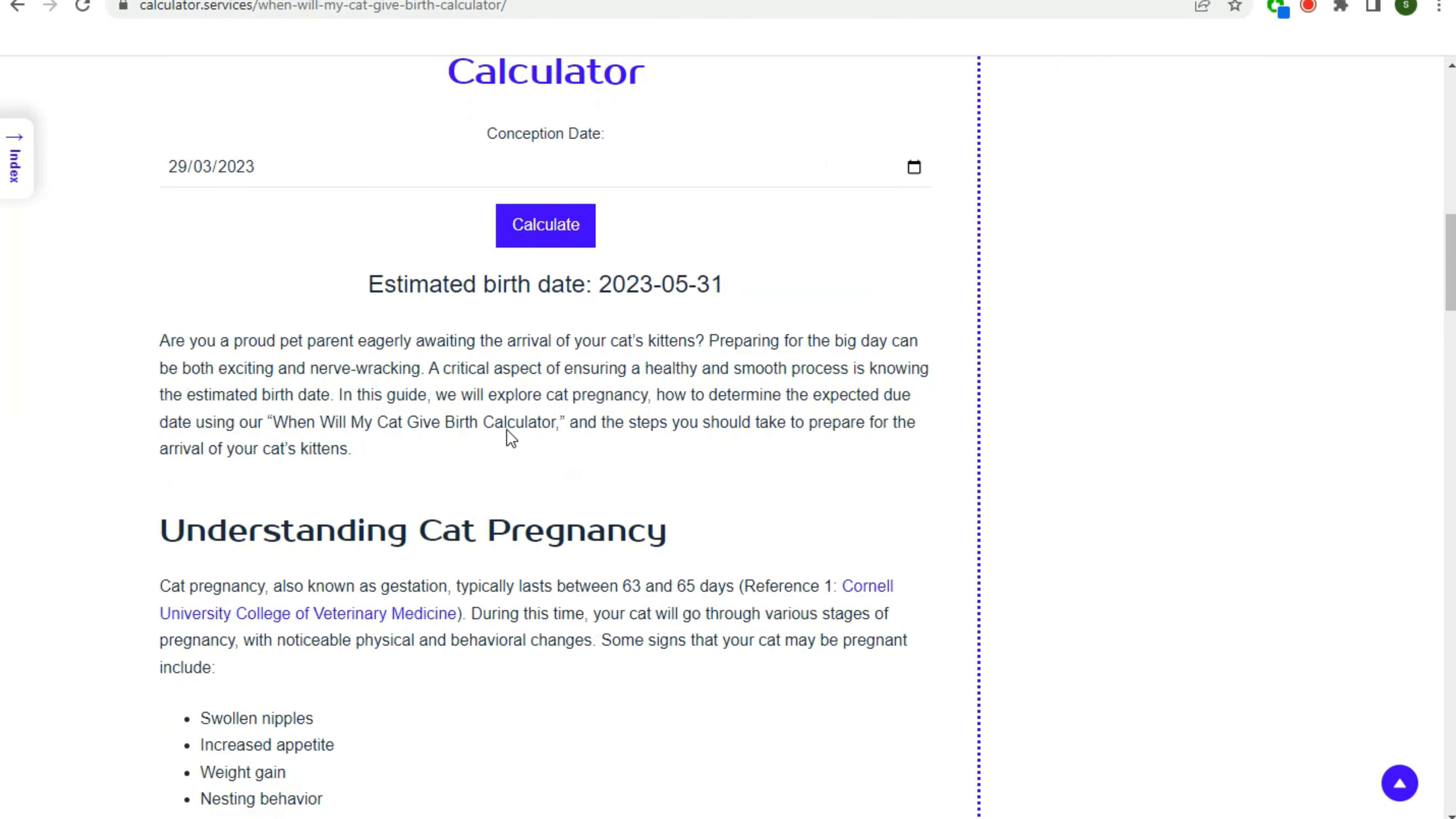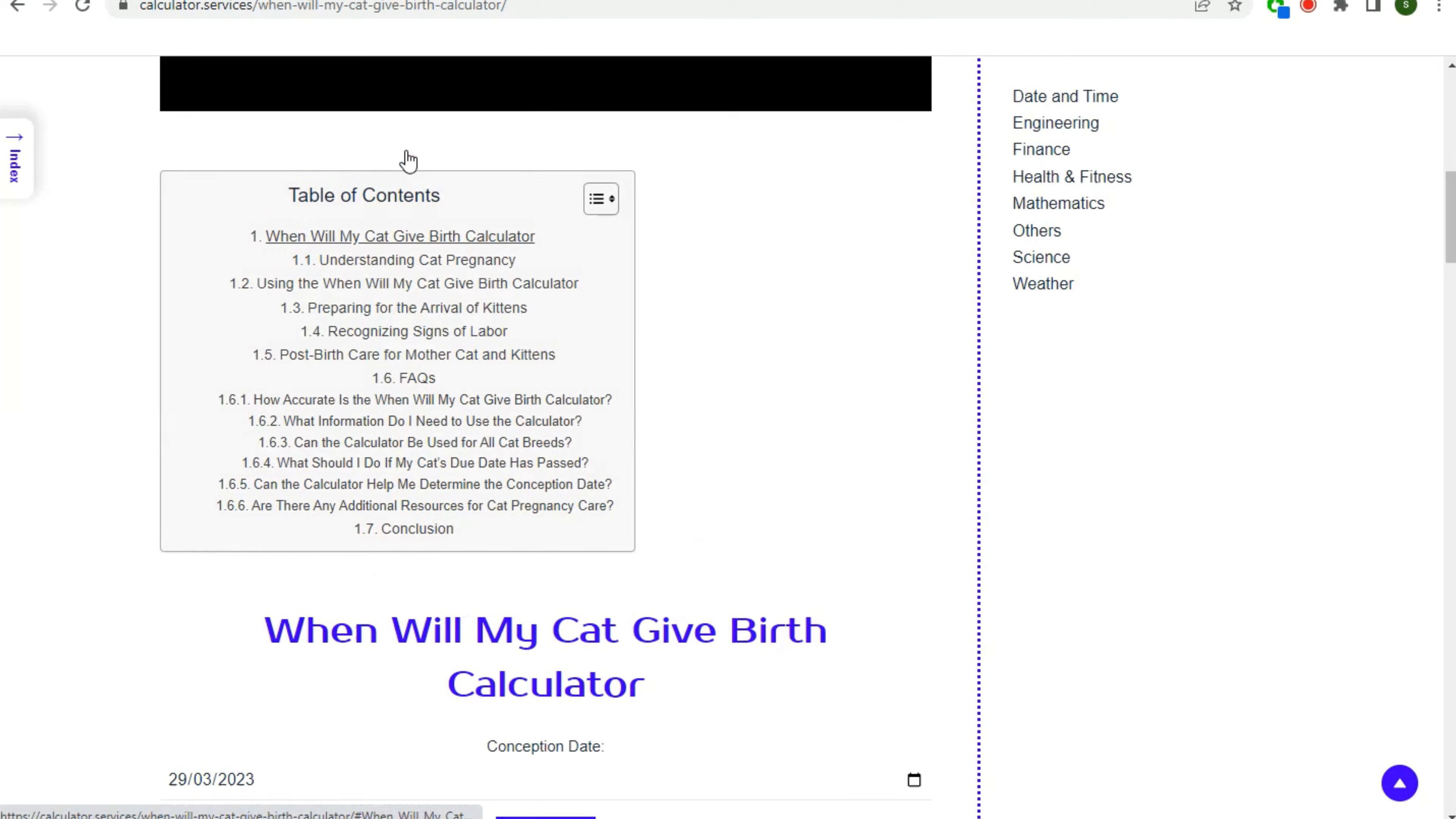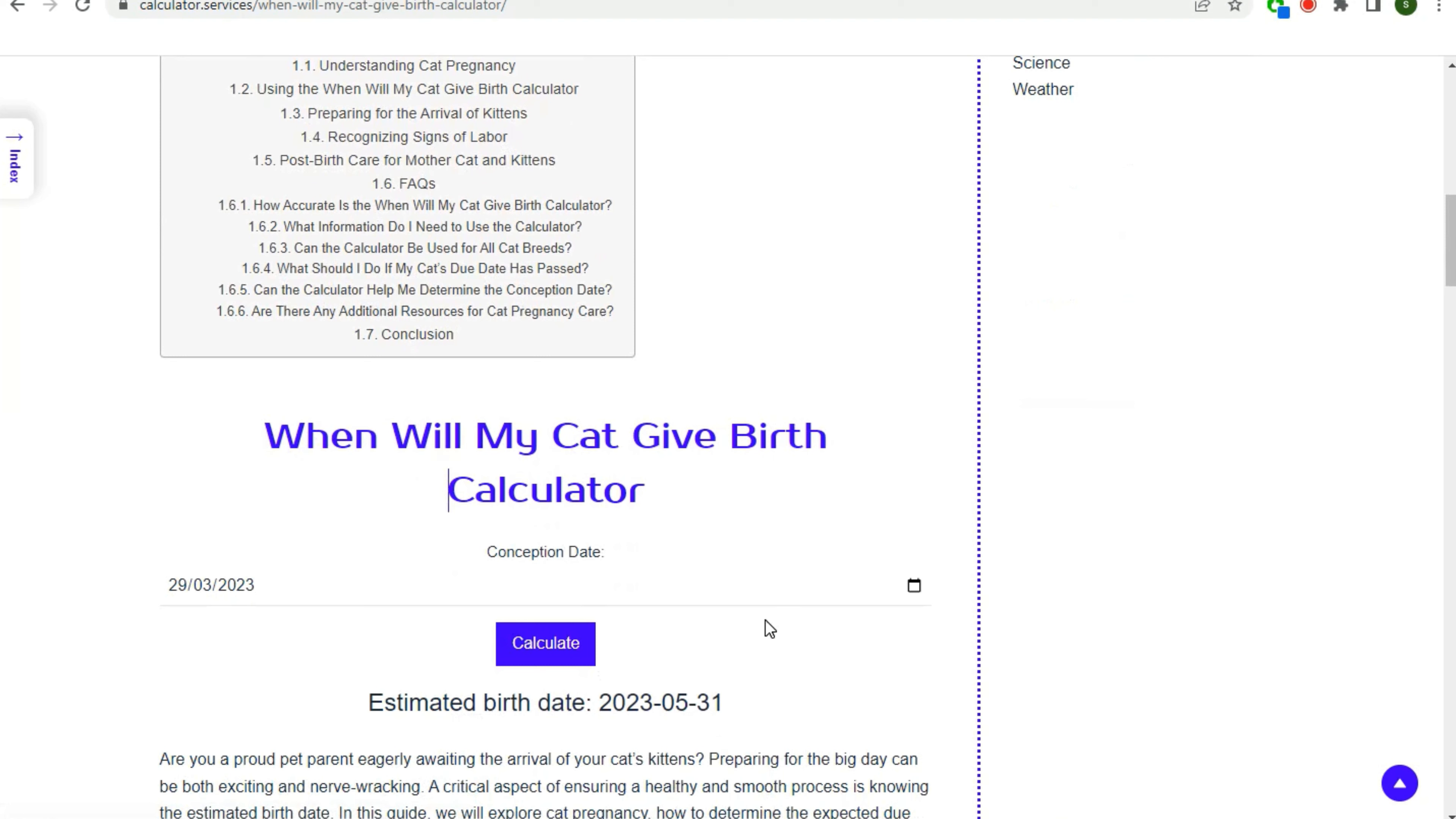Are you a proud pet parent eagerly awaiting the arrival of your cat's kittens? Preparing for the big day can be both exciting and nerve-wracking. A critical aspect of ensuring a healthy and smooth process is knowing the estimated birth date. In this guide we will explore cat pregnancy, how to determine the expected due date using our When Will My Cat Give Birth Calculator, and the steps you should take to prepare for the arrival of your cat's kittens.